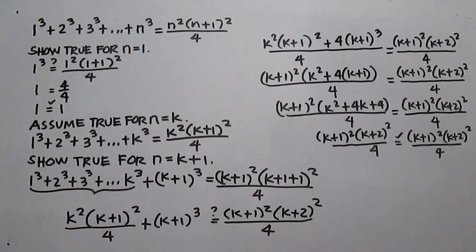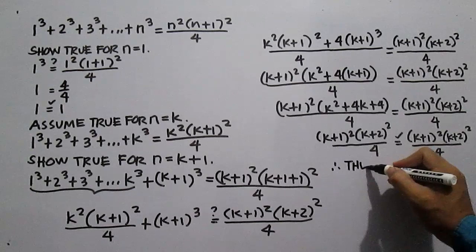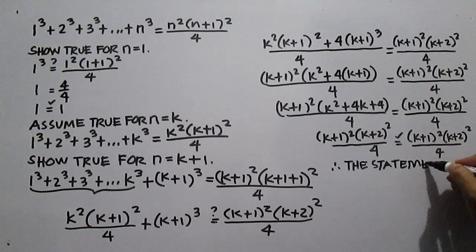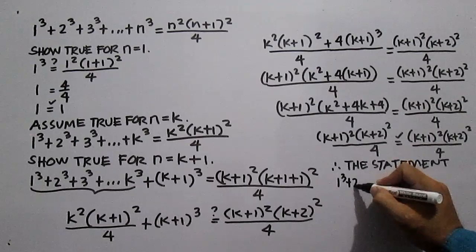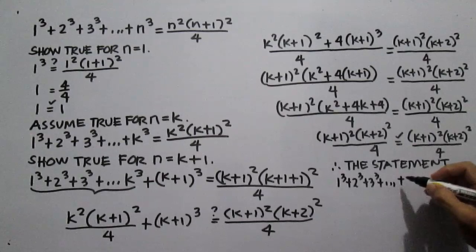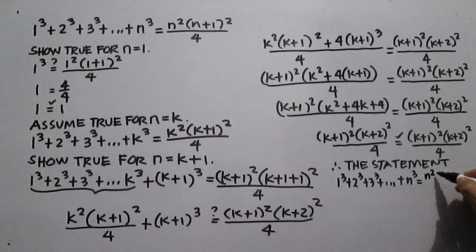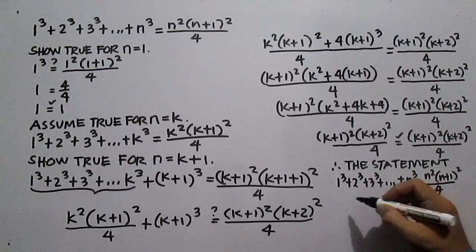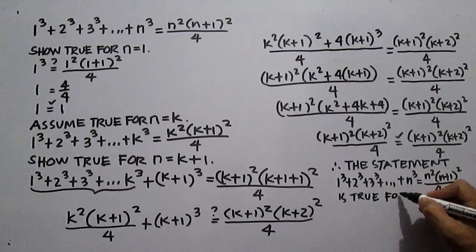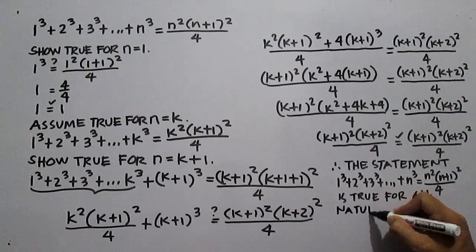Therefore, the statement 1 cubed plus 2 cubed plus 3 cubed plus dot dot dot plus n cubed is equal to n squared times the square of the quantity n plus 1, all over 4, is true for all natural numbers n.